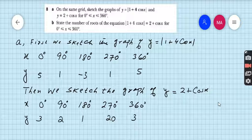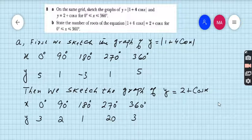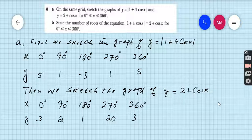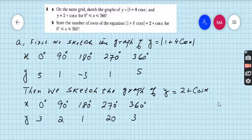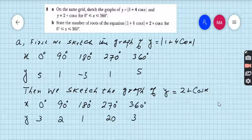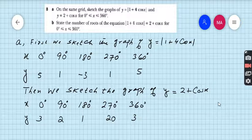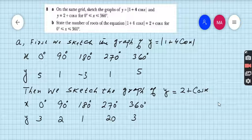First we have to make the table of y equals 1 plus 4 cos x. I took 90 degree intervals because it is the equation of cos x and cos x has the period of 360 degrees. But if you want to take another interval like 30, 45, or 60, no matter, you will get the same answer. Take your scientific calculator, write down 1 plus 4 cos 0, you will get 5. 1 plus 4 cos 90, you will get 1, and so on. Similarly, 1 plus 4 cos 360, you will get 5.